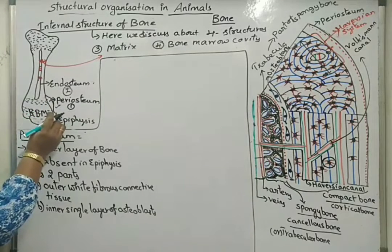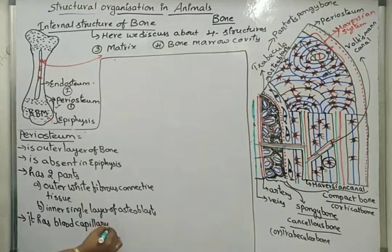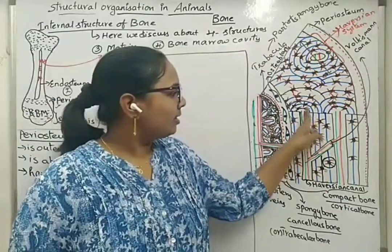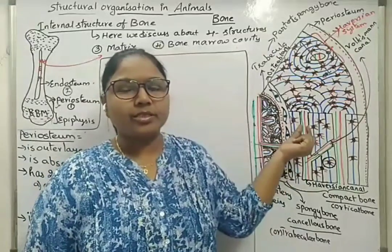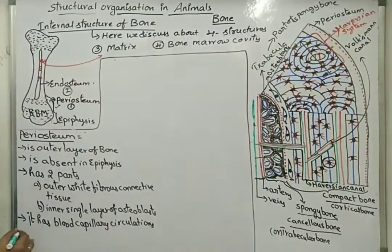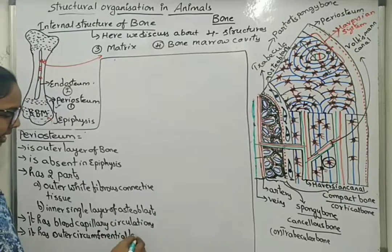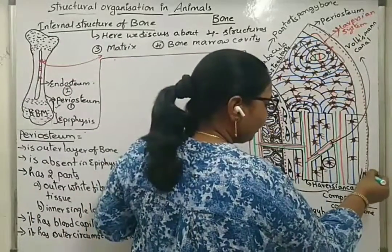Periosteum has contact with blood capillaries — it has blood capillary circulation. Because in the case of osteons, outside the Haversian canal there is no blood circulation; food material is just diffused into that area. It also has outer circumferential lamellae.